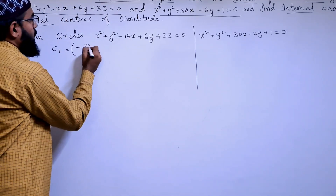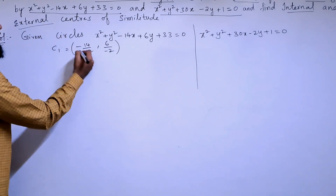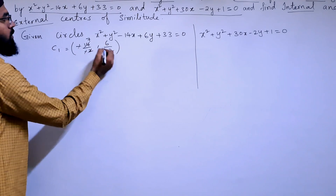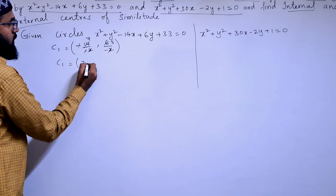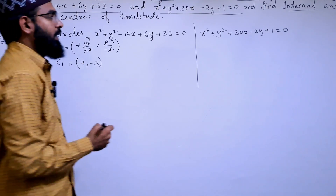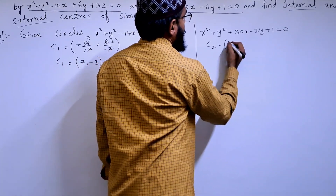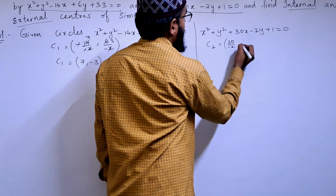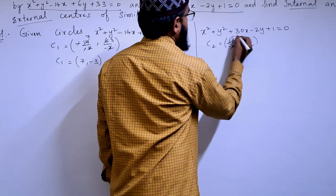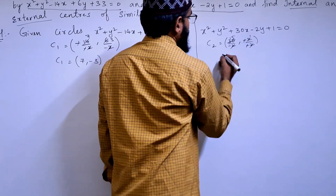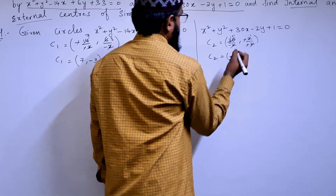We know the center form uses −2g and −2f. For the first circle, 2g = −14, so g = 7, and 2f = 6, so f = −3. Thus C1 = (7, −3). For the second circle, C2 = (−15, 1).